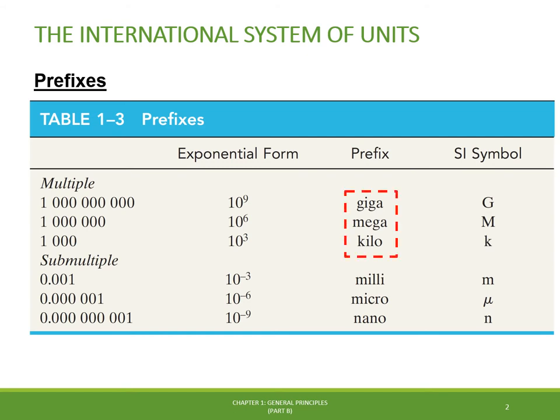The most used multiple prefixes are GIGA, which multiplies the number by one billion; MEGA, which multiplies the number by one million; and KILO, which multiplies the number by one thousand.